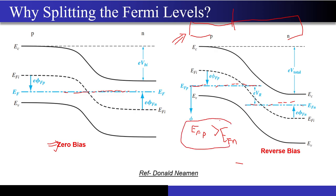Another question: why is Efp at a higher energy level compared to Efn in the reverse bias energy band diagram? A hint: it is not related to doping — it is related to the applied bias. By just looking at these two quasi-Fermi levels, can you tell whether the PN junction is in forward or reverse bias?